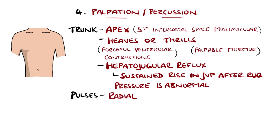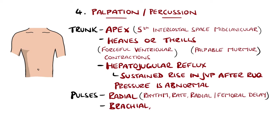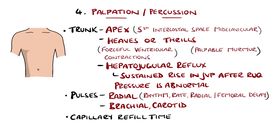Radial pulses should also be felt, feeling for the rhythm and the rate, as well as comparing radial pulses for any differences or delays indicating aortic dissection, or radial to femoral delay that can indicate aortic coarctation. From here, brachial and carotid pulses are next, with carotid in particular being assessed for bounding and volume — for example large volume pulses associated with aortic regurgitation, or small volume with aortic stenosis. Capillary refill time is checked by pressing the tip of the finger for 5 seconds, then observing how long it takes for the colour to return, with normal being around 2 seconds.